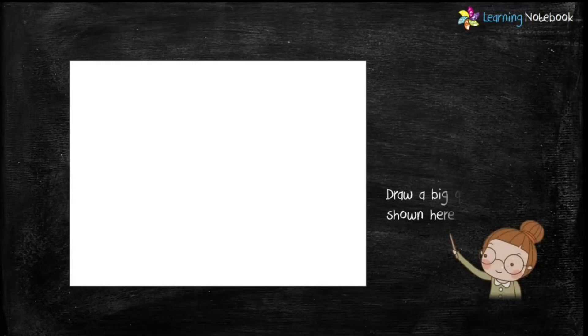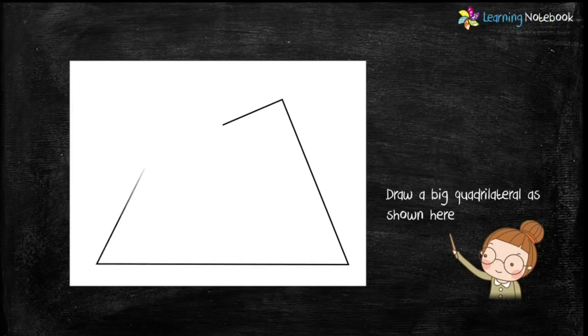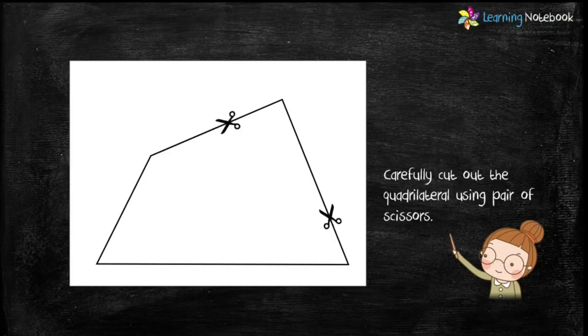Let's start with the activity. Take the A3 white sheet or cardboard and draw a big quadrilateral as shown here, and then carefully cut out this quadrilateral using a pair of scissors.